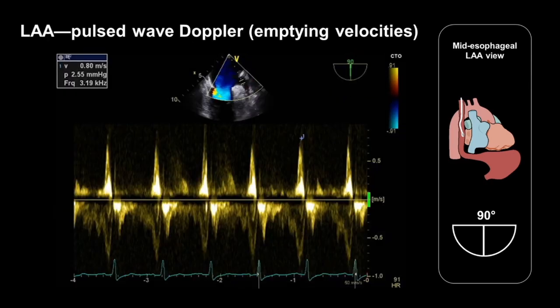We should also perform pulsed wave Doppler to measure the emptying velocities of the appendage. To do this, place the pulsed wave Doppler sample volume approximately one centimetre inside the orifice of the appendage. In this case the emptying velocity is 0.8 metres per second. Low appendage emptying velocities below 0.2 metres per second are associated with an increased risk of thrombus and embolism, whereas normal emptying velocities greater than 0.4 metres per second indicate a higher chance of sustaining sinus rhythm after cardioversion for atrial fibrillation.